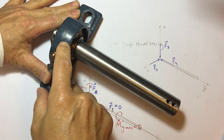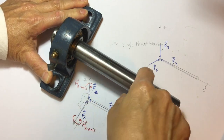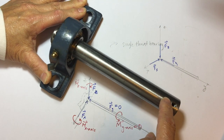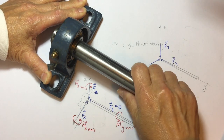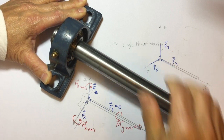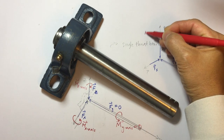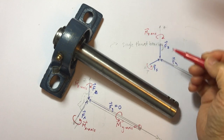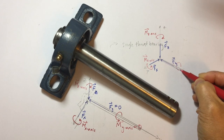The journal bearing prevents the shaft from rotating about the z-axis and rotating about the x-axis. There is no resistance to rotation about the y-axis. So we have our reaction moment about the z-axis, about the x-axis, and again no reaction moment about the y-axis.